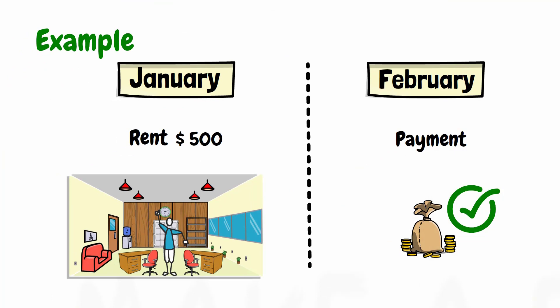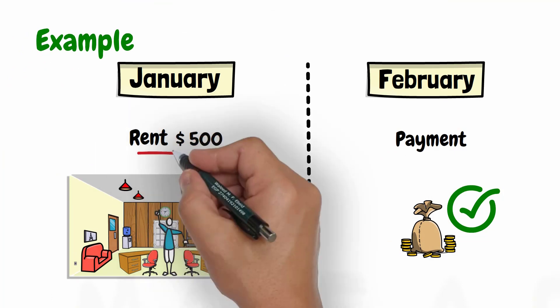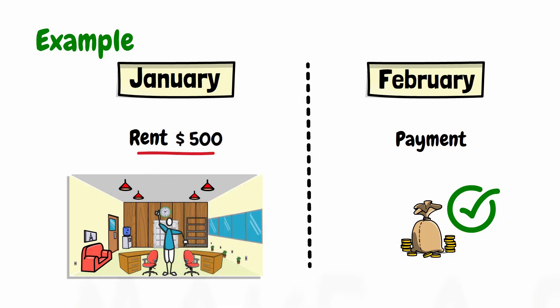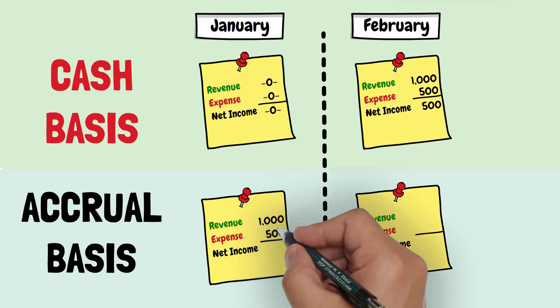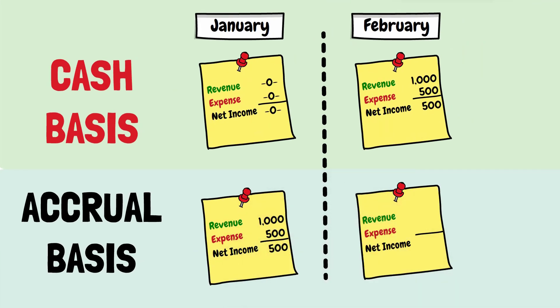Under the accrual basis, the company incurred the rent expense during January, because it already used the lease space during January. So, that expense is shown in the income statement for January, regardless of when the cash payment for that expense was made.